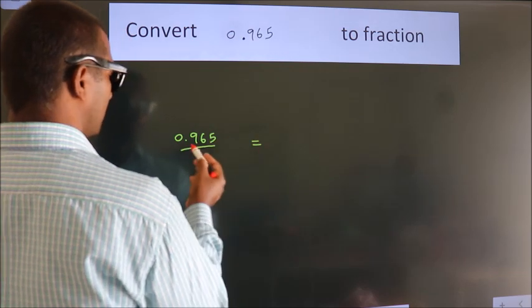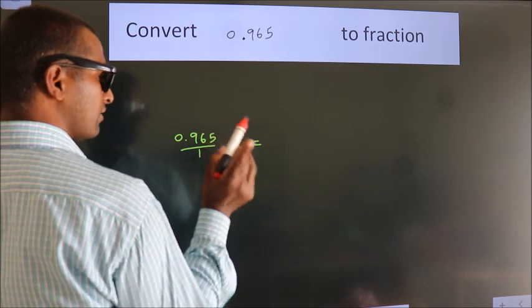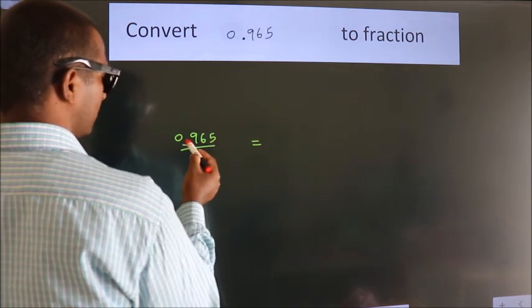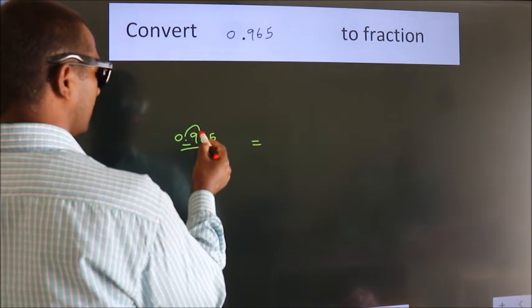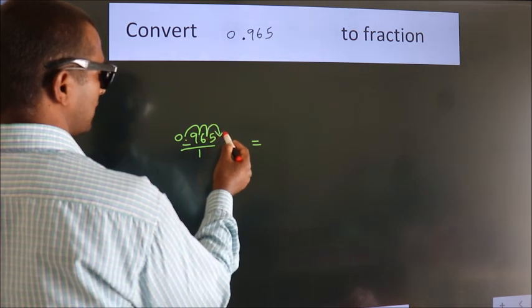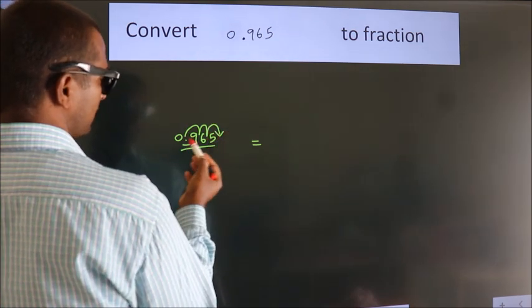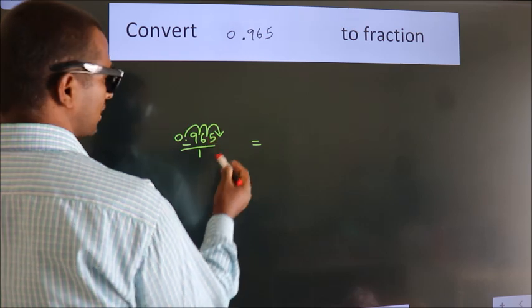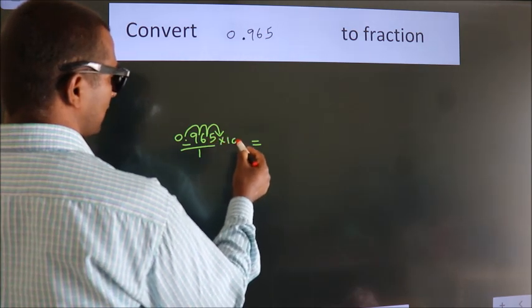To convert this to a fraction, we have to move this decimal after 1, 2, 3 numbers. To move this decimal after 3 numbers, multiply it with 1000.